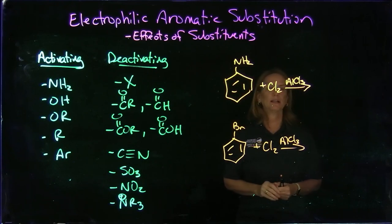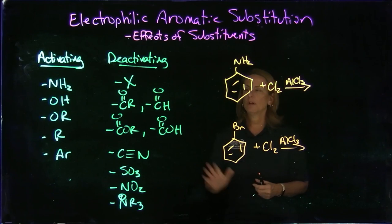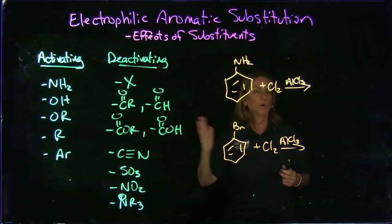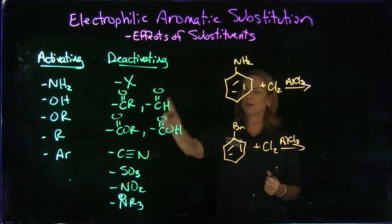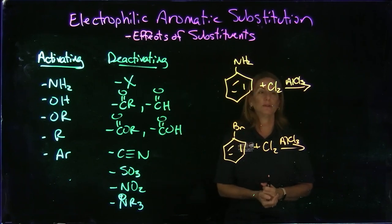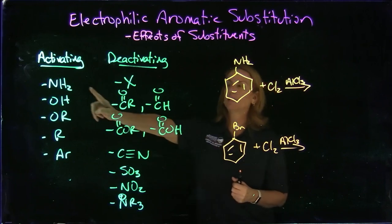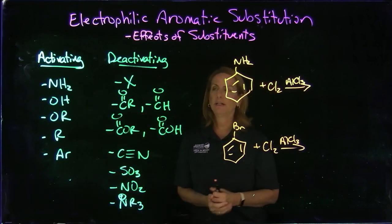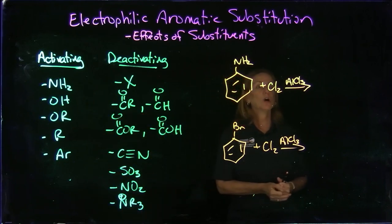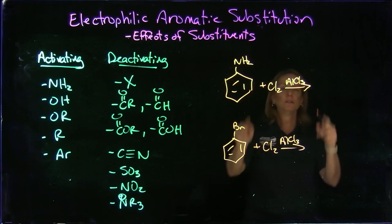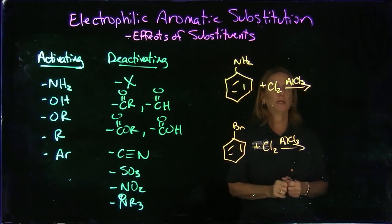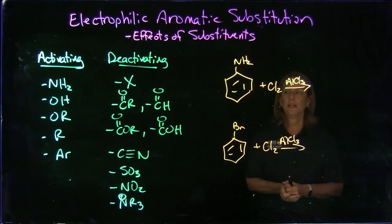they both would occur. But the ones on this side that have more electron density, that have electrons, are more activating. They're faster than regular benzene. The ones that have less electron density are more partially positively charged, and it gets stronger as we go down the list. So this is the most activating at the very top, the least activating at the very bottom. They are slower than benzene. So the top one would occur much, much faster than the bottom one.